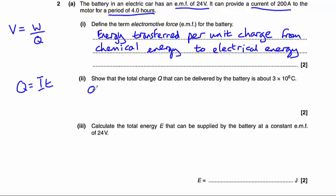So Q equals current of 200 amps multiplied by our time period, which is 4 hours. However, we almost never use hour as our time unit. The only occasion where you would use an hour would be when you're calculating it in kilowatt hours. Other than that,